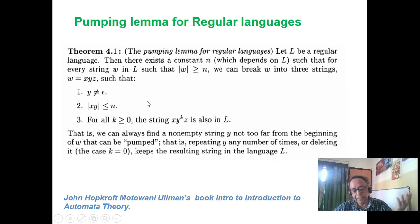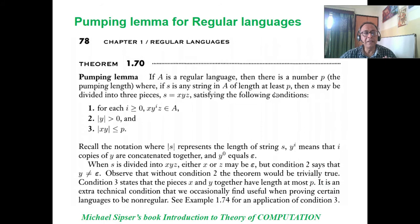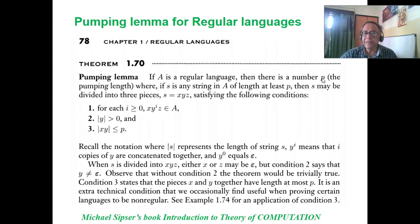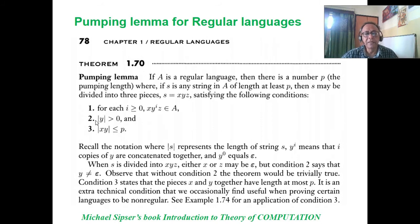Let us see how the definition appears in Sipser's book. If A is a regular language, then there is a number P — the pumping length. If S is any string in A of length at least P, then S may be divided into three pieces S = XYZ satisfying the same conditions. The wording is a little different from Hopcroft, but more or less the same. Both books are excellent — Hopcroft goes into very detail. I believe you should read both.